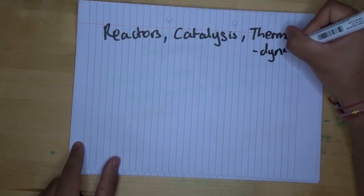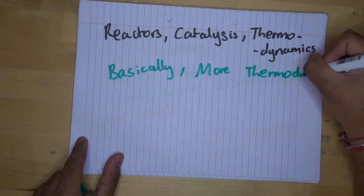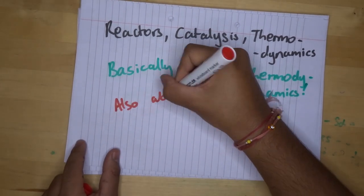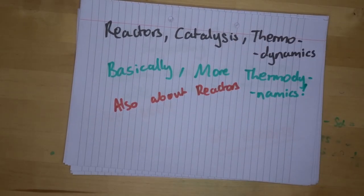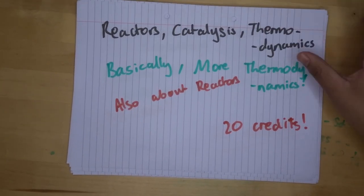The sixth module in second year of chemical engineering is reactors, catalysis, and thermodynamics. This module is basically just more thermodynamics, but you also learn about different types of reactors and its different parts to help you design reactors in the future. This module is also worth 20 credits.